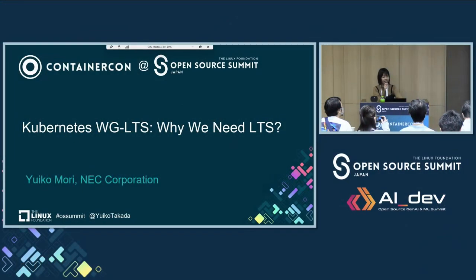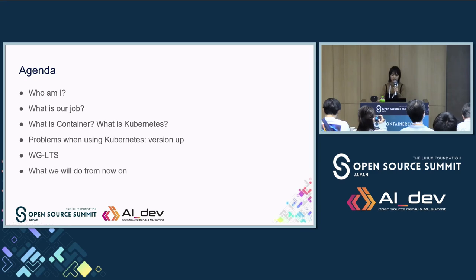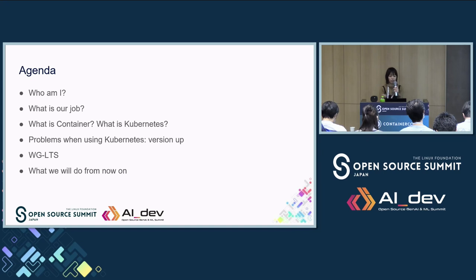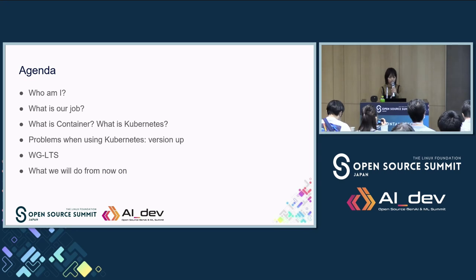I'm from NEC. Today I would like to talk about Kubernetes. The title is 'Kubernetes LTS Working Group: Why We Need LTS.' Here is today's agenda. First I will introduce myself and our job and our customers. Then I will talk about containers and Kubernetes, characteristics of Kubernetes, problems when we upgrade Kubernetes, the LTS Working Group, and finally what we will do from now on.